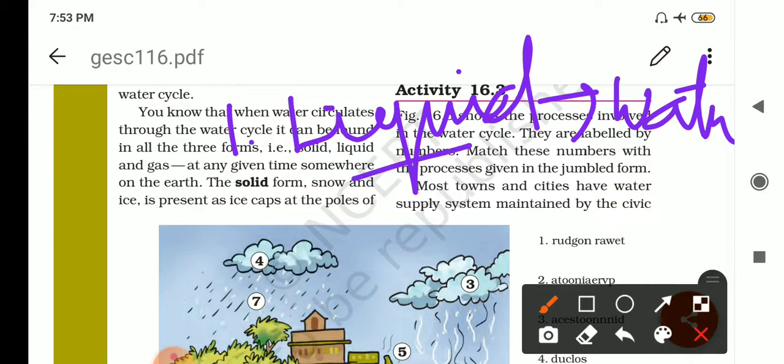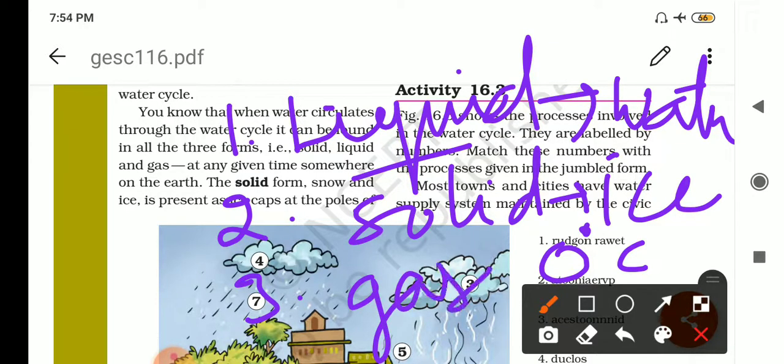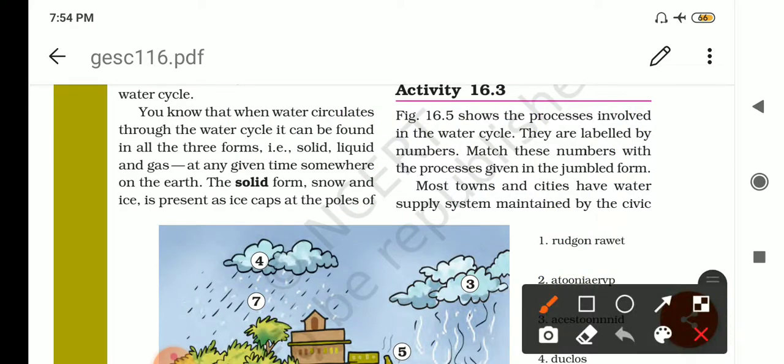Number two, next is solid. Solid means ice or snow. At zero degree centigrade, this water will convert into ice or snow. And third is the gaseous form. Gaseous form means the water will evaporate or convert into vapor. At a hundred degrees centigrade, the water will convert into vapors.